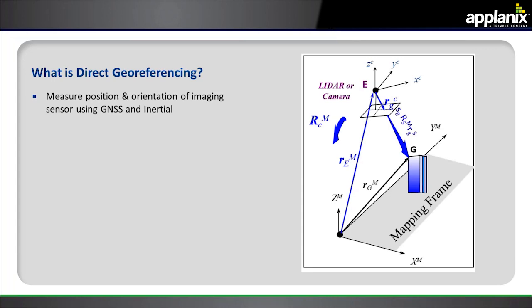The imaging sensor can be LiDAR or a camera - the technique is pretty much the same. We use the data from the position orientation system along with the sensor data, such as the LiDAR range or the camera orientation, to directly geocode each pixel or point on the ground.